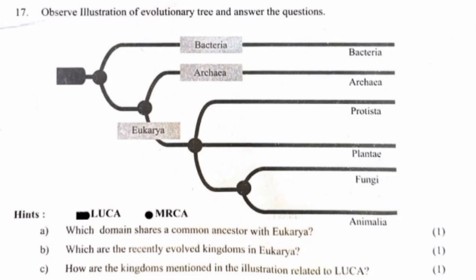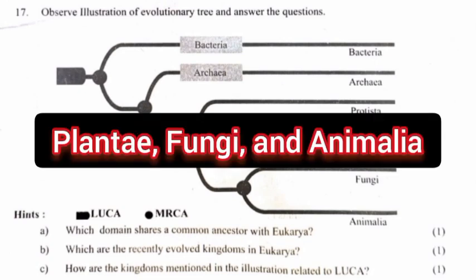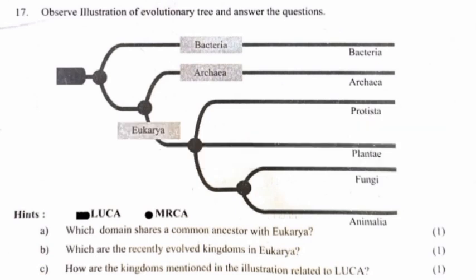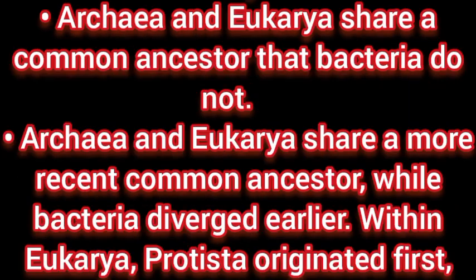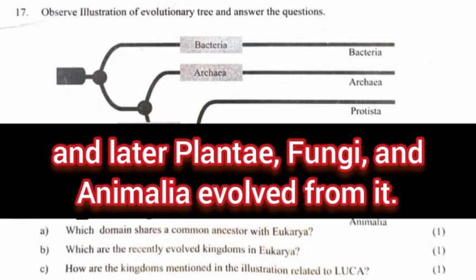Question 17: Observe the illustrations of the evolutionary tree and answer. Part A: Which domain shares a common ancestor with Eukarya? Answer: Archaea. Part B: Which are the recently evolved kingdoms in Eukarya? Answer: Plantae, Fungi, and Animalia. Part C: How are the kingdoms in the illustration related to LUCA? Answer: LUCA — Last Universal Common Ancestor — refers to the single shared ancestor of all known life on Earth. From LUCA, three main lineages arose: Bacteria, Archaea, and Eukarya. Archaea and Eukarya share a more recent common ancestor, while Bacteria diverged earlier. Within Eukarya, Protista originated first, and later Plantae, Fungi, and Animalia evolved from it.